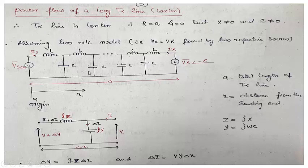X is the distance from the sending end at which we calculate the voltage and current. We can extend it from sending end to receiving end. Z is equal to j times the series reactance per unit length, and Y is equal to j·omega·C per unit length, assuming R equal to 0 and G equal to 0. Taking one small element, this is the series impedance Z and this is the shunt admittance Y.